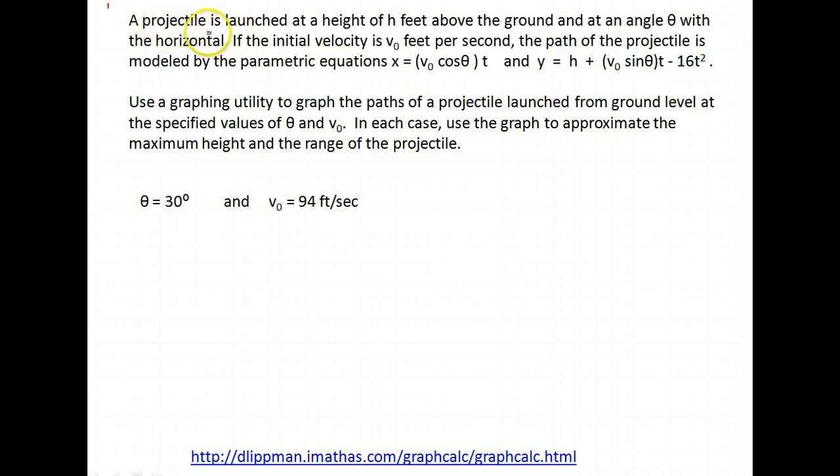Now there is a common set of parametric equations we use to describe this. It says here projectile is launched at height of h feet above the ground, the angle that it's launched at is theta with the horizontal ground, the initial velocity is v naught feet per second. The path of the projectile can be described by this parametric model where t is the number of time in seconds.